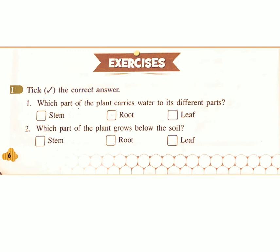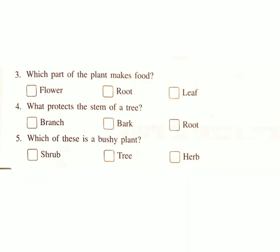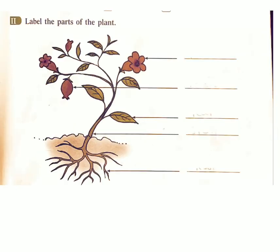Exercises — choose the correct answer. 1. Which part of the plant carries water to its different parts? Stem, root, or leaf? Answer: stem. 2. Which part of the plant grows below the soil? Stem, root, or leaf? Answer: root. 3. Which part of the plant makes food? Flower, root, or leaf? Answer: leaf. 4. What protects the stem of a tree? Branch, bark, or root? Answer: bark. 5. Which of these is a bushy plant? Shrub, tree, or herb? Answer: shrub.